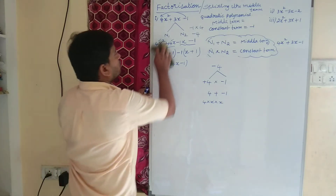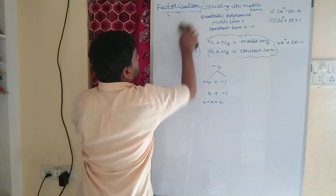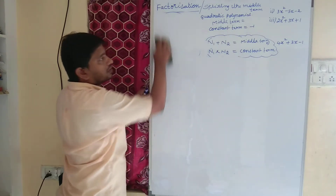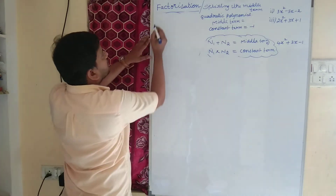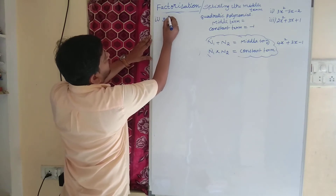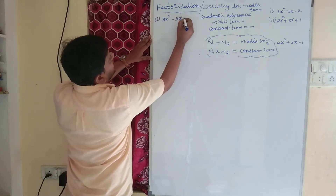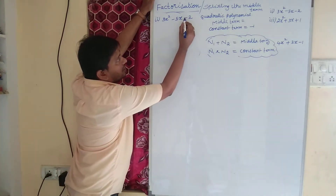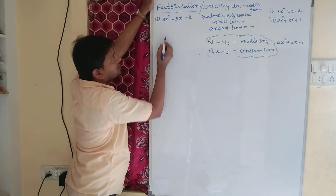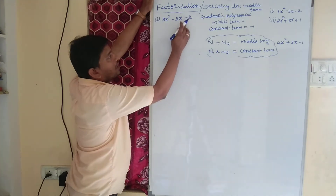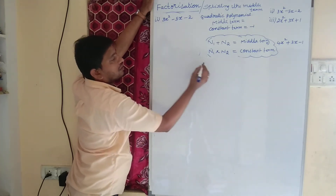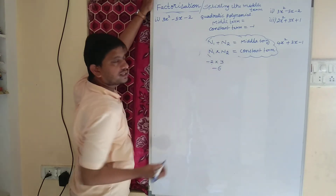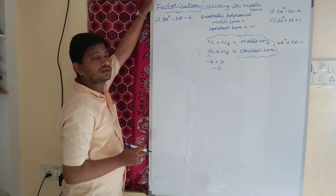Let us observe one more question: 3x square minus 5x minus 2. Again, here the constant term is minus 2 and the coefficient of x square is 3. So minus 2 into 3 equals minus 6.